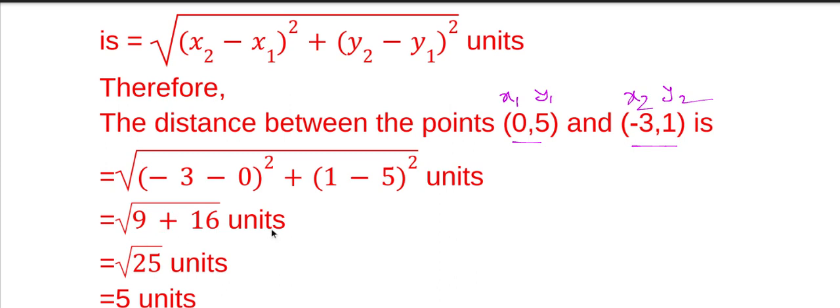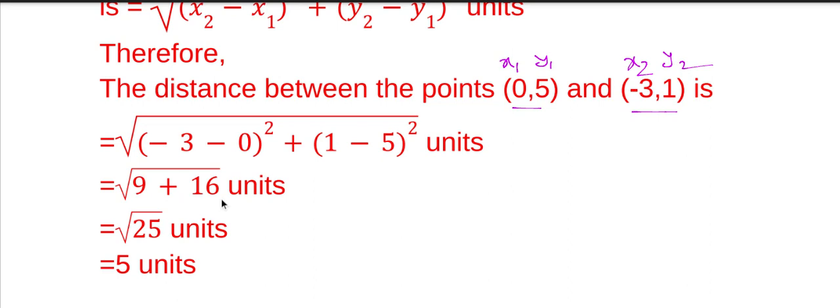And 1 - 5 is -4, and (-4)² is 16. Therefore, square root of 9 + 16 equals square root of 25, which is equal to 5 units.